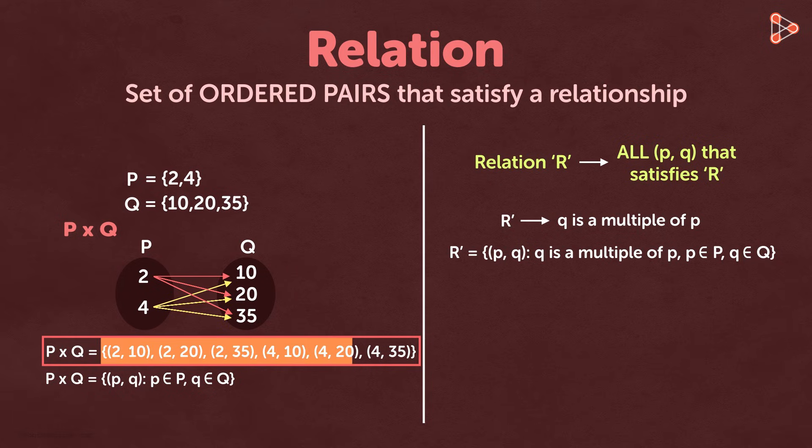Now let's choose ordered pairs from the Cartesian product P cross Q that satisfies the relation R dash. Look at the ordered pairs in the Cartesian product. Notice that 10 is a multiple of 2, 20 is a multiple of 2, and 20 is a multiple of 4. So we get the ordered pairs 2 comma 10, 2 comma 20, and 4 comma 20 such that every ordered pair satisfies the relation Q is a multiple of P.